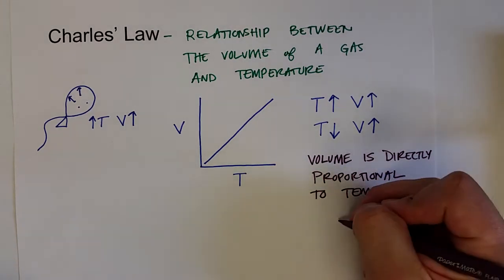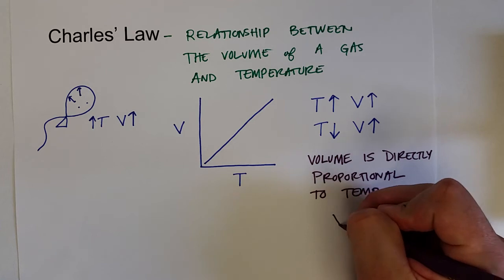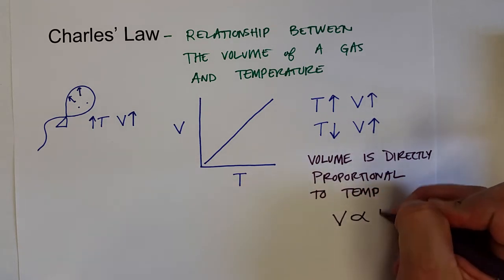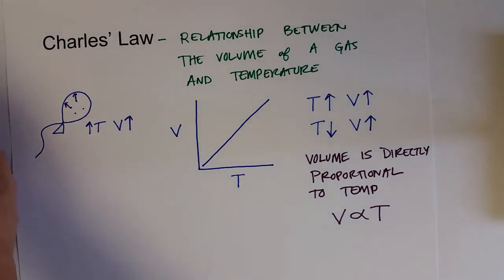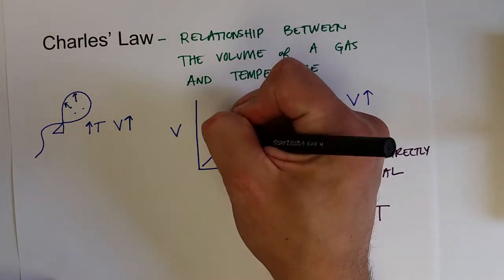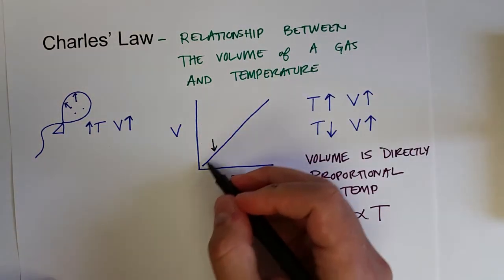And so we could write this as a mathematical function. So volume is proportional to temperature, using the Greek letter alpha as the proportional. We could also derive an equation from this relationship.